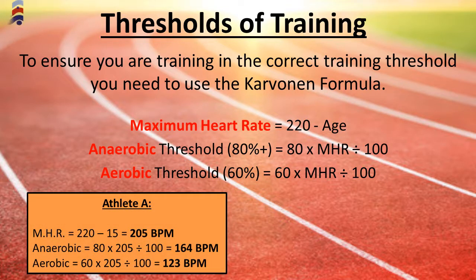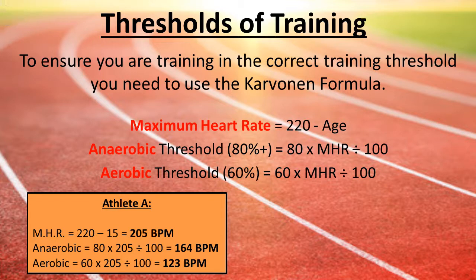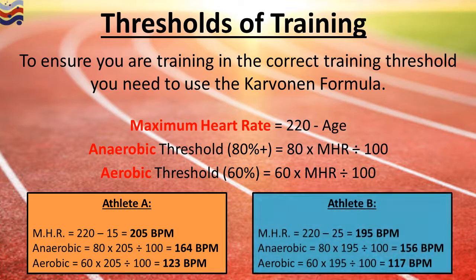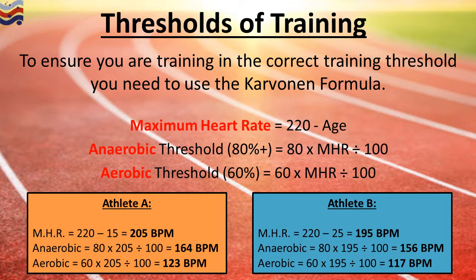For example, Athlete A is 15 years old, so their maximum heart rate is 205 beats per minute. To work anaerobically they need their heart rate above 164; to work aerobically, above 123 but not beyond 164, otherwise they switch to the anaerobic threshold. Athlete B is 25 years old, giving a maximum heart rate of 195, with different aerobic and anaerobic thresholds accordingly. When planning your training program, make sure you are sitting in the correct threshold.